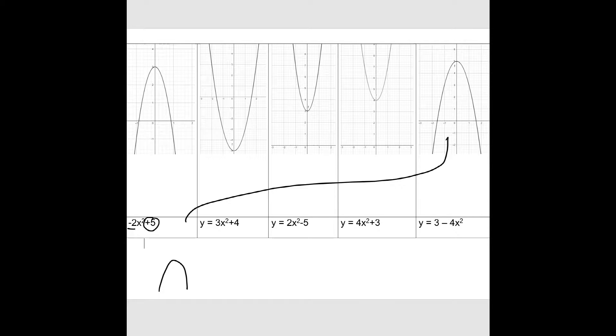y equals 3x squared plus 4. It's a happy quadratic because it's got a positive number by the x squared. The coefficient of x squared is positive. And there's a plus 4 on the end, which tells me that the turning point has y coordinate of 4. That's going to be the fourth graph along.